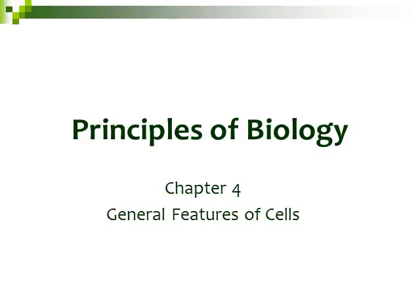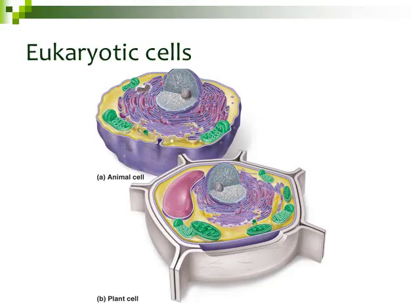This is part 3 of 5 on chapter 4, General Features of Cells. In the last section of this chapter, you looked at prokaryotic cells. In this section, we're going to start to look at the eukaryotic cells — specifically animal and plant cells — and we're going to look through all the parts of them.